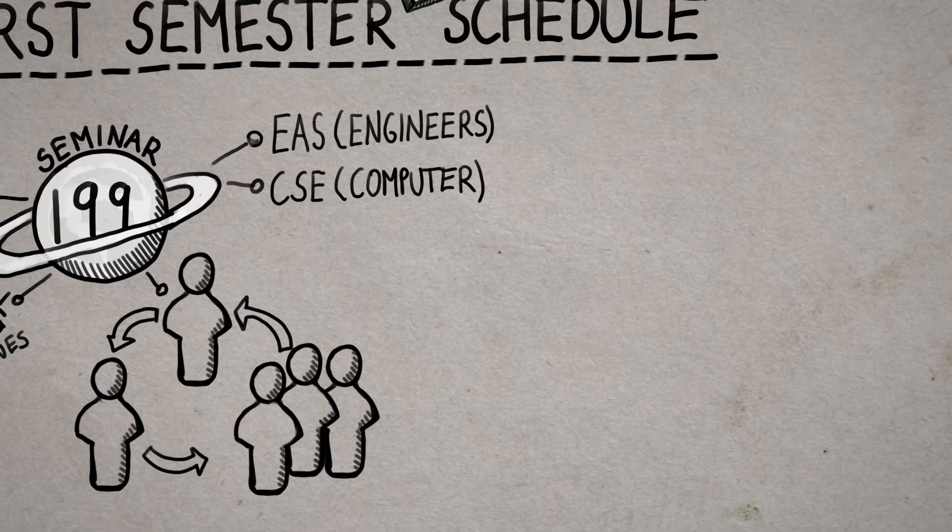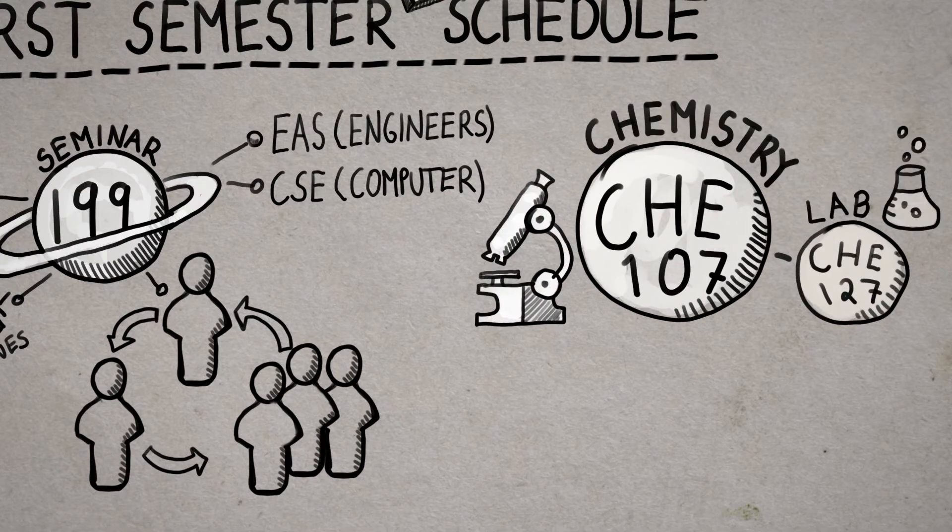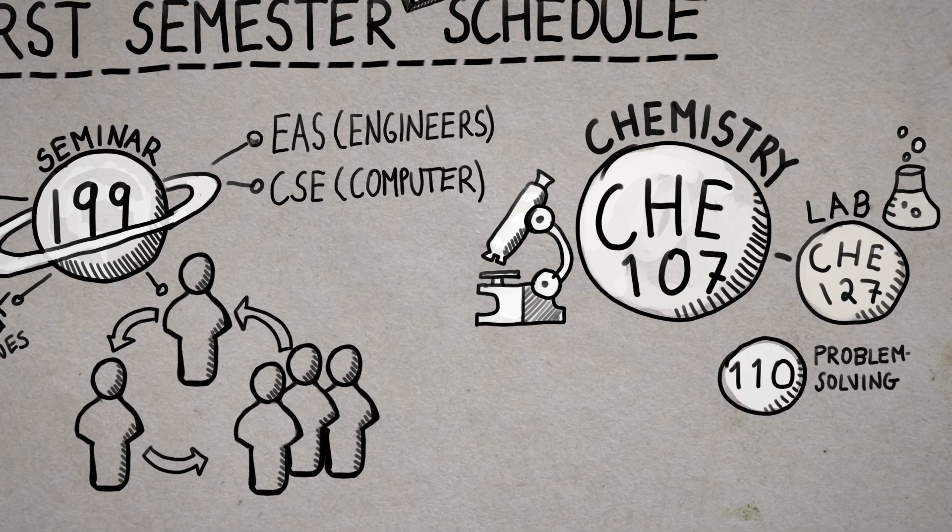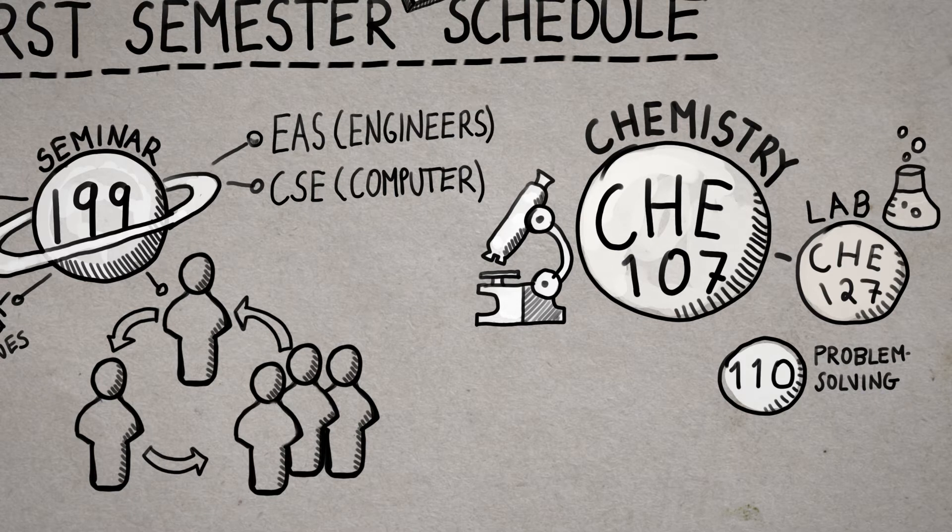Engineering students also take Chemistry 1 with the lab. You might also see Problem Solving for General Chemistry on your schedule, too. This is for students who did not take High School Chemistry or who didn't do well in it.